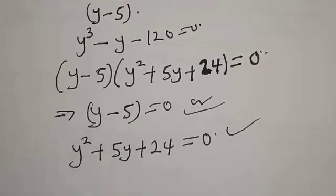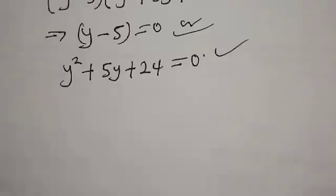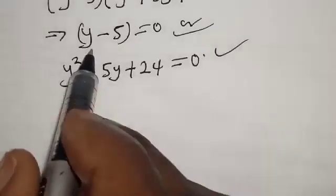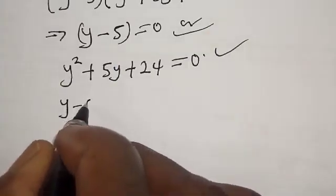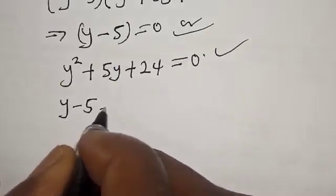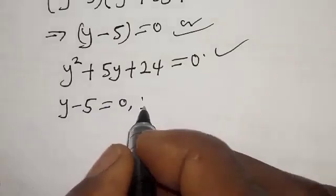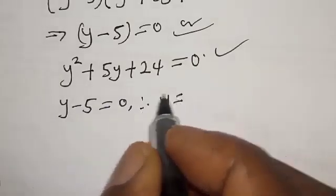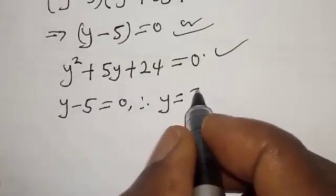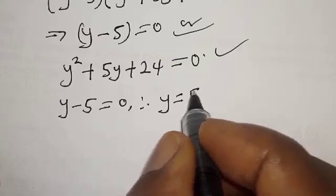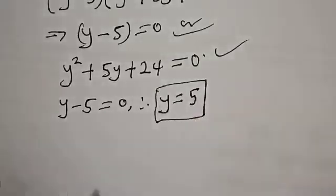From the first case, Y minus 5 equals 0. Therefore Y is equal to 5.